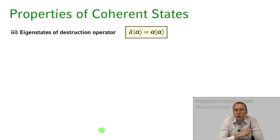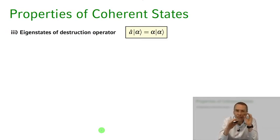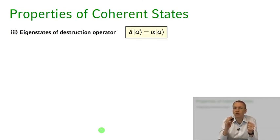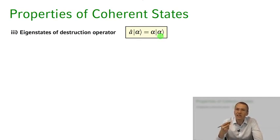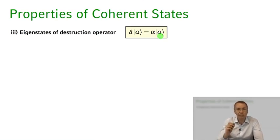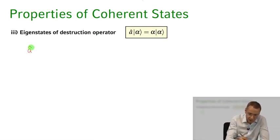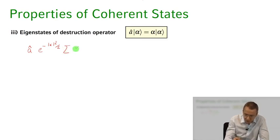One very important property of coherent states is that they are eigenstates of the destruction operator â. This is highly different from Fock states: if you lose one photon from the Fock state |n⟩ by applying the destruction operator, you immediately end up in a different, orthogonal state |n−1⟩. But for the coherent state, applying â to |α⟩ gives α times |α⟩ — the coherent state is an eigenstate of the destruction operator â with eigenvalue equal to the complex amplitude α. Let's prove this important property.